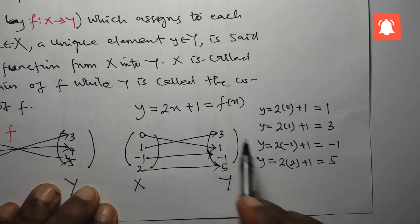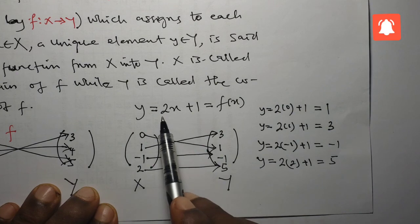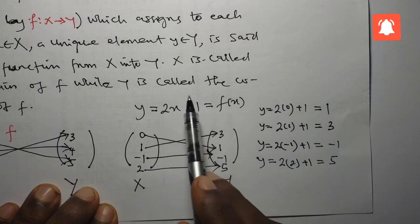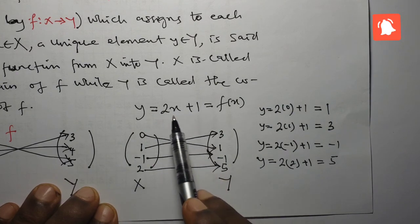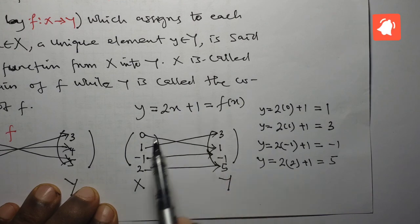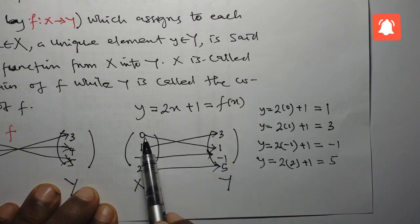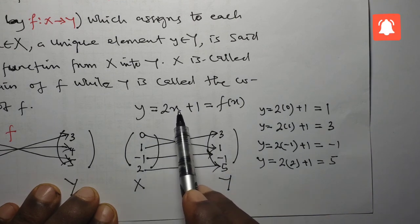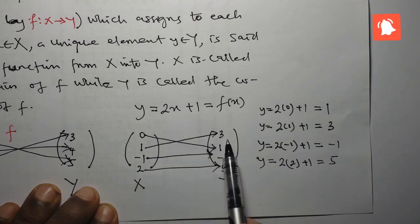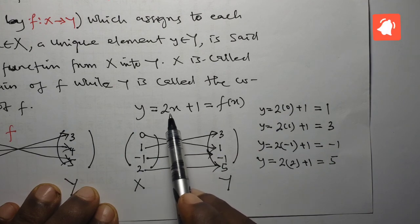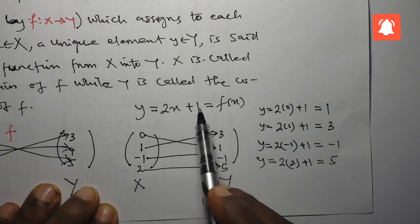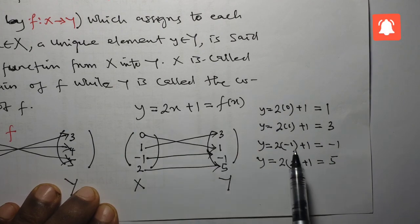So what do we see here? With this function — this rule 2x + 1 — the rule is saying that when you pick any element in the domain, called x, to find where it maps in the co-domain, you multiply that element by 2 and add 1 to the result. And that's what we have done here.